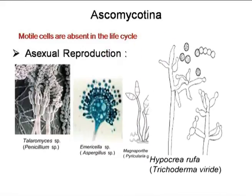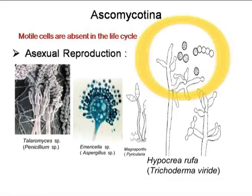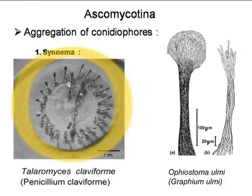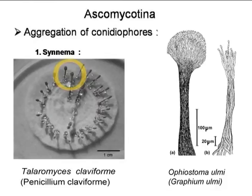In Trichoderma viride, again, this type of non-motile aplanospores are produced at their tip. This conidiophore may sometimes aggregate to form macroscopic fructifications. This aggregation may be of various types. One is synema or coremia. In the picture, you can see the synema of Penicillium claviforme, where the conidiophores are united and conidia are differentiated at the apex.